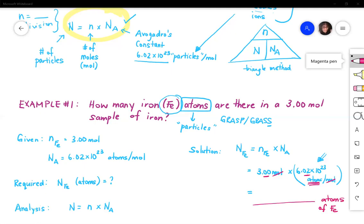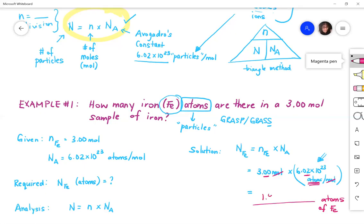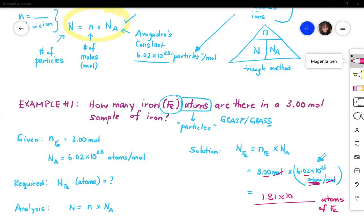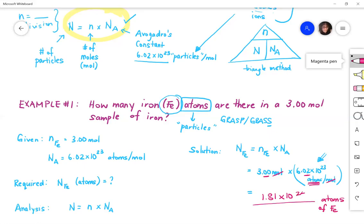What my answer should be, remember significant digits. You have two decimal places here, two decimal places here. So if I go back to my calculator, I can round up. So it's 1.81 times 10 to the 24. So my answer is 1.81 times 10 to the 24 atoms of iron.